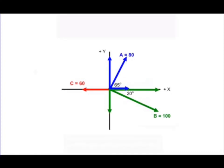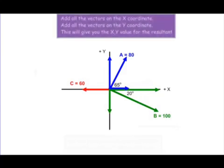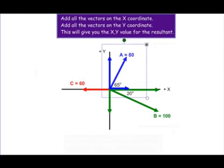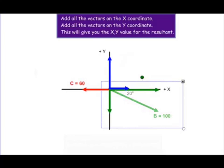Let's take a closer look at what we actually do with all of these components. We'll be adding up all the vectors in the x coordinate and also adding up all the vectors on the y coordinate, and we'll use these to determine the resultant. Let me take away the original vector a and vector b so we can just work with the components.